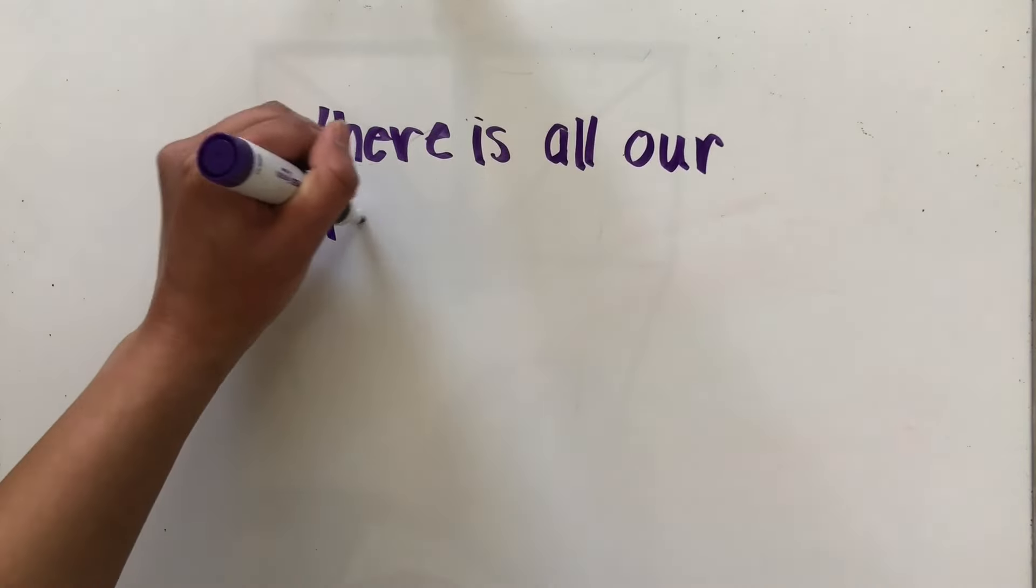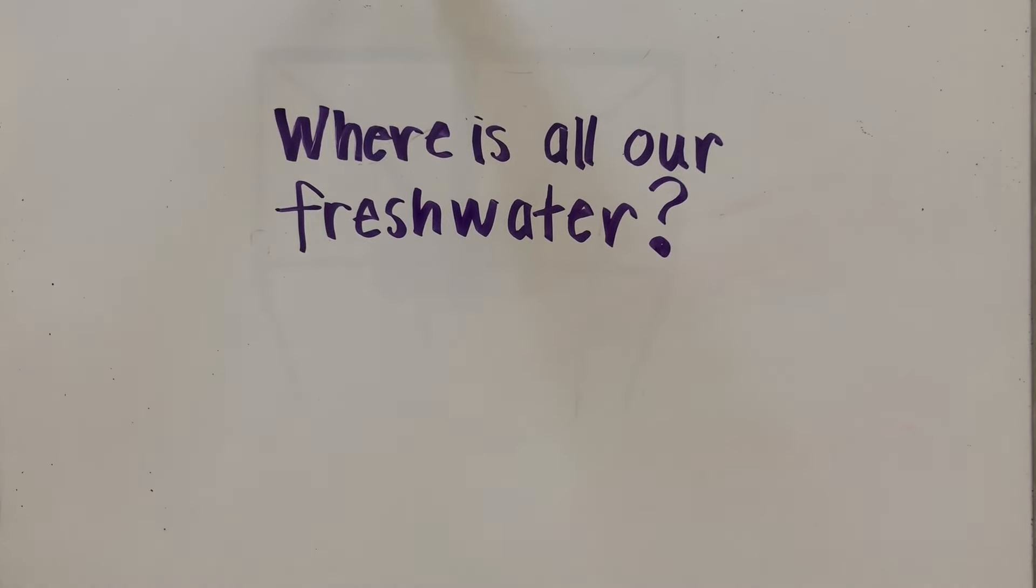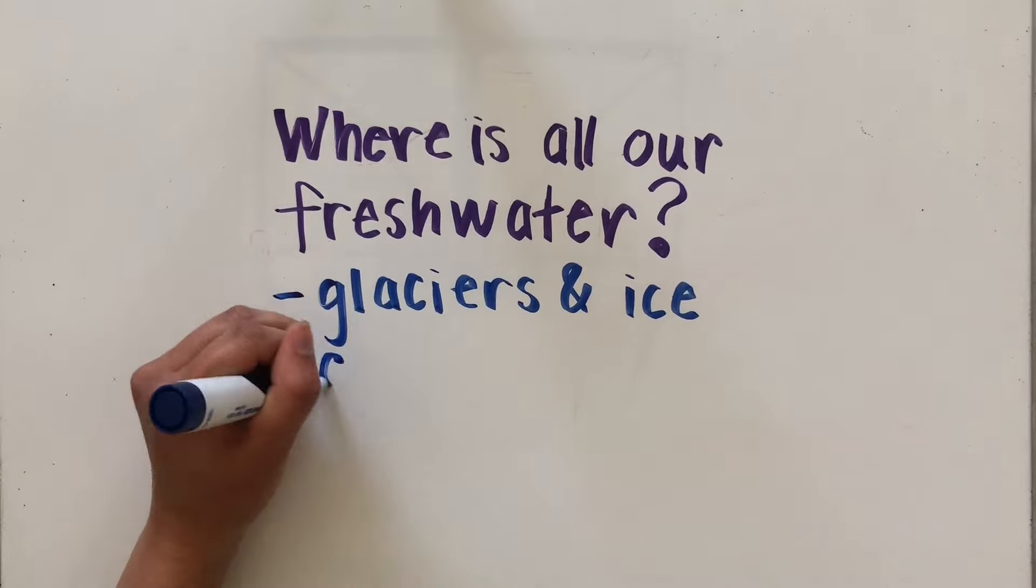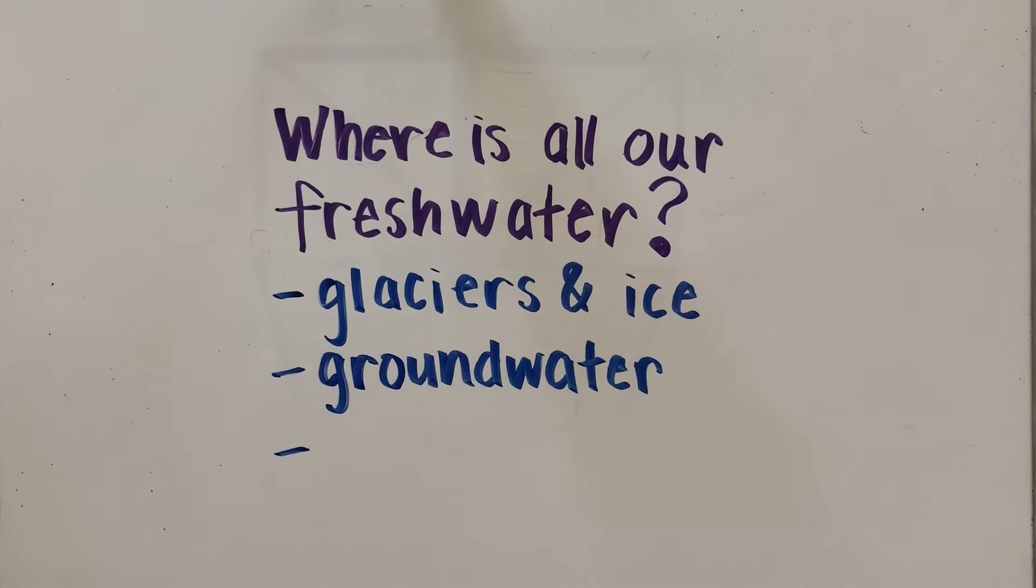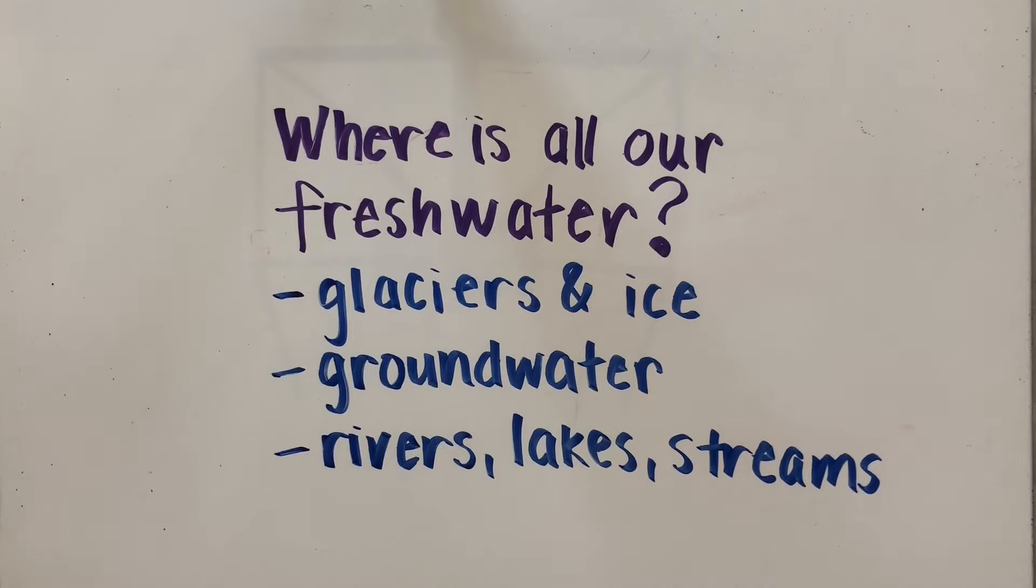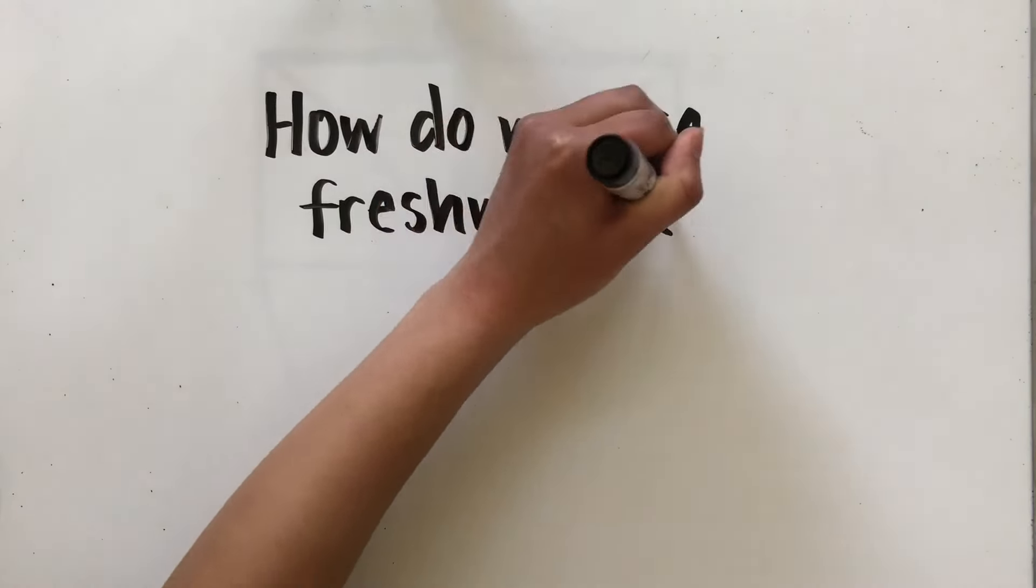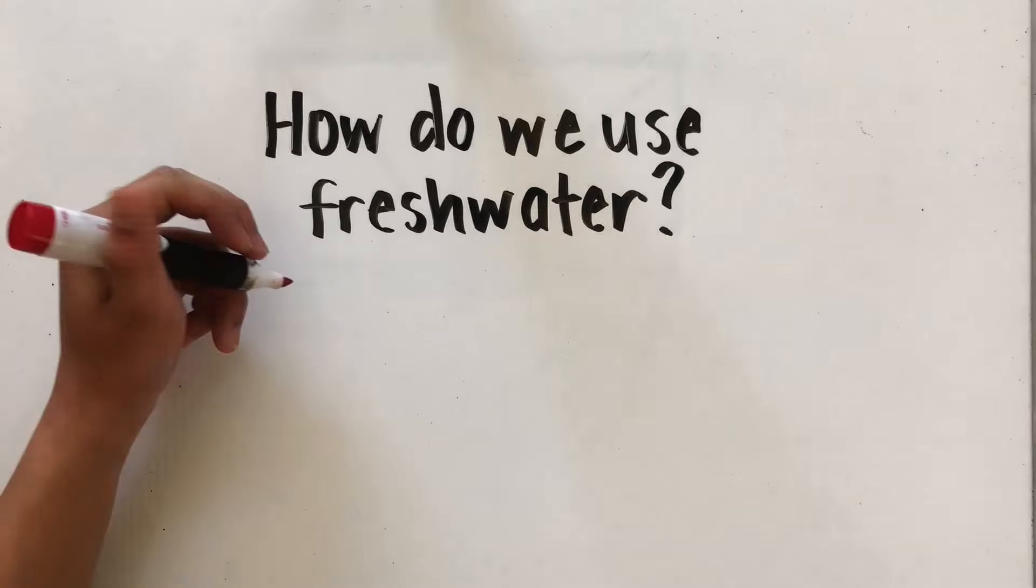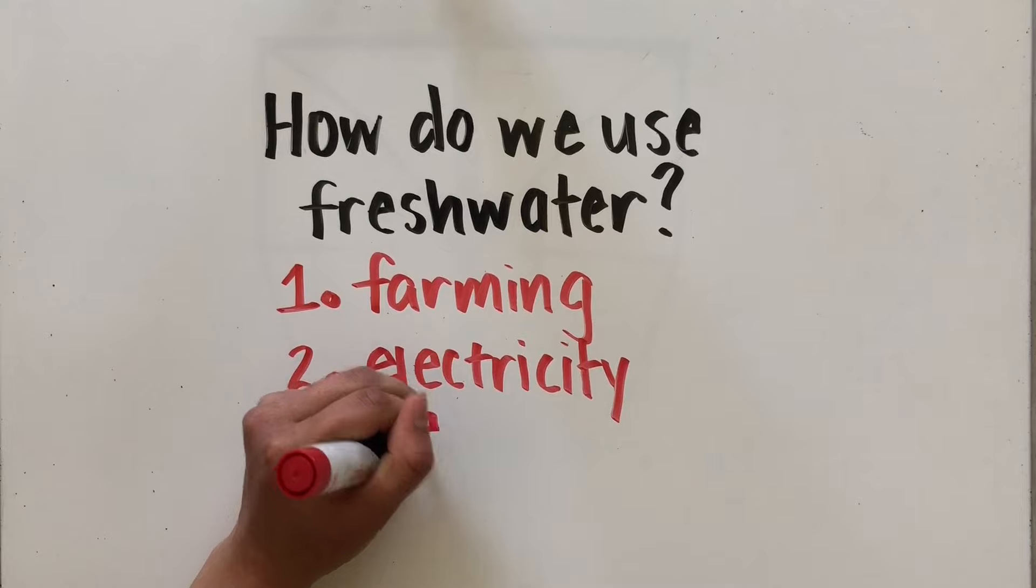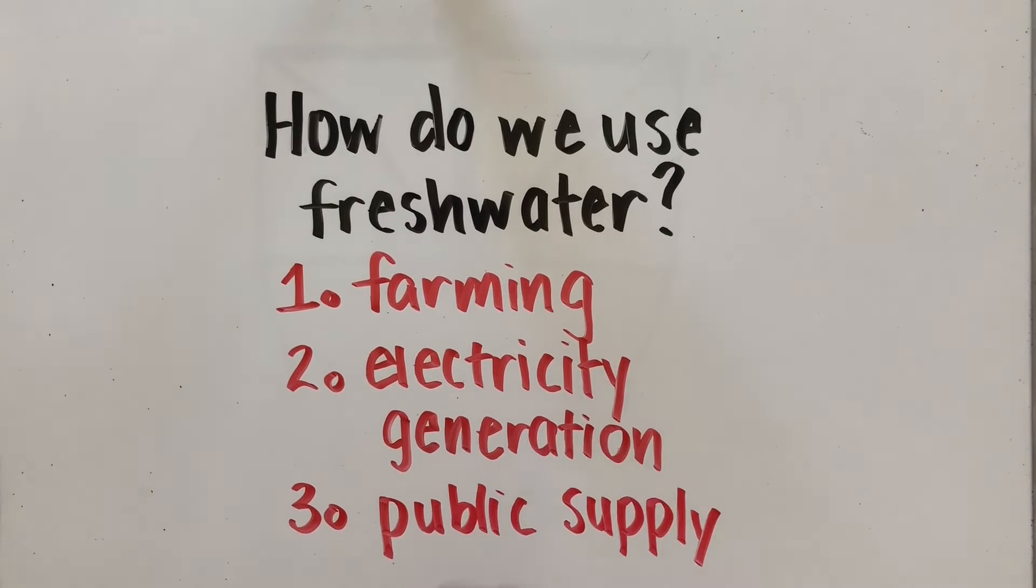So where is most of the fresh water on Earth? Most of the fresh water is frozen in the form of glaciers and ice, while a smaller percentage of fresh water is located in groundwater and in a few rivers, lakes, and streams. So how do we use all this fresh water? The top three uses of fresh water for humans is in farming, electricity generation, and for our public supply.